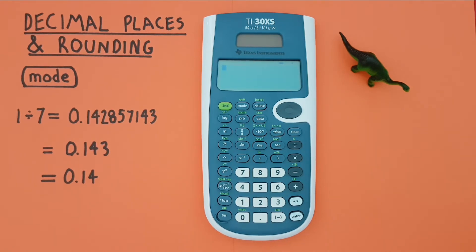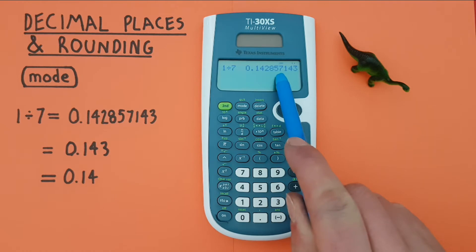Now typically when we do an equation on this calculator, like let's say 1 divided by 7, it'll display all the possible decimal places that will fit on the screen. This is called float mode and it's what our calculator is typically set to.